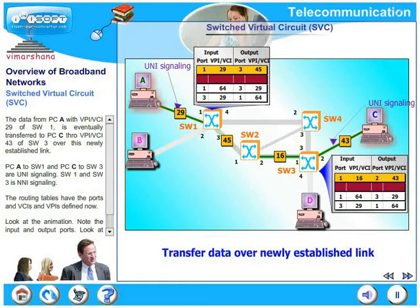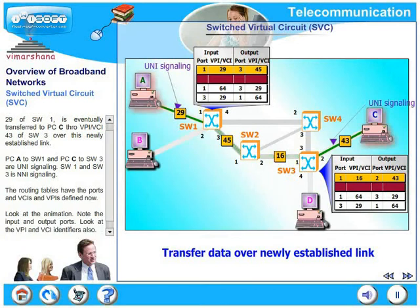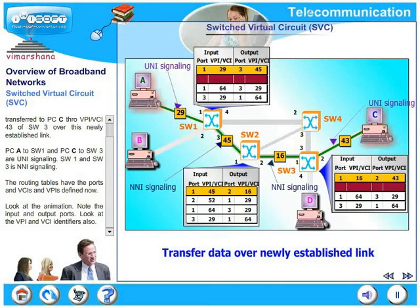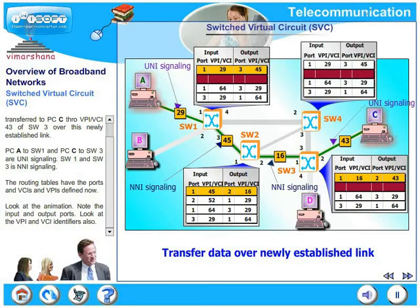SW2 to SW3 is NNI signaling. The routing tables have the ports and VCIs and VPIs defined now. Look at the animation. Note the input and output ports. Look at the VPI and VCI identifiers also.